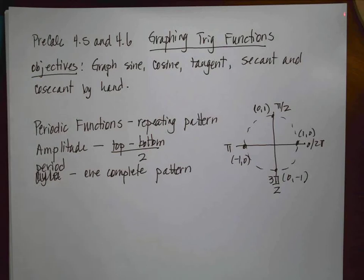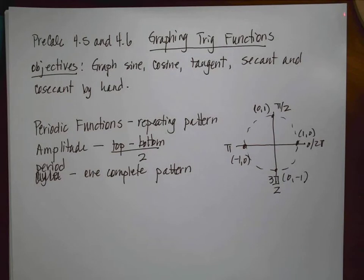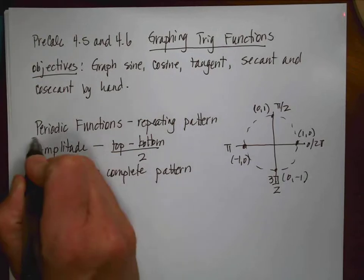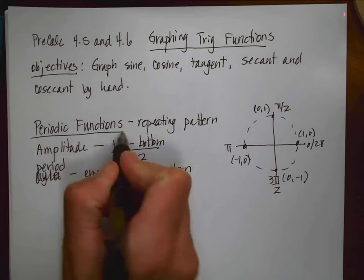Hello, math humans. We're going to do sections 4.5 and 4.6 today — we're going to be graphing trig functions. Specifically today, we're going to do sine, cosine, tangent, secant, and cosecant by hand. As we get started, we need to go back and review some vocabulary words.